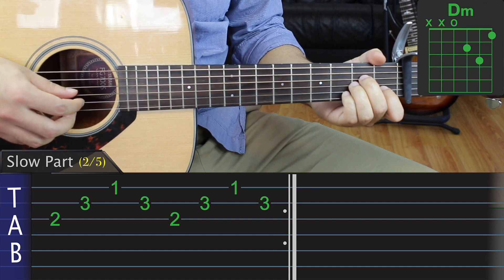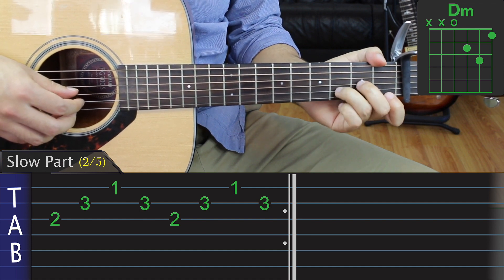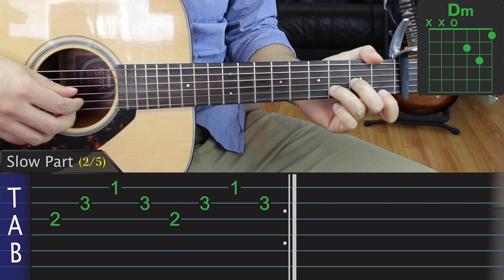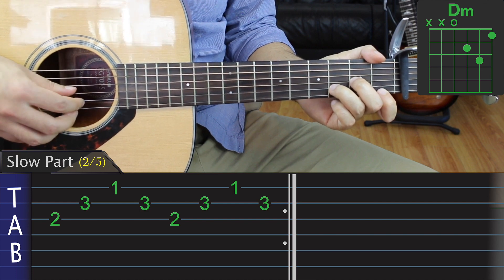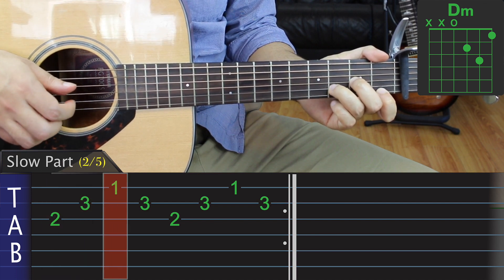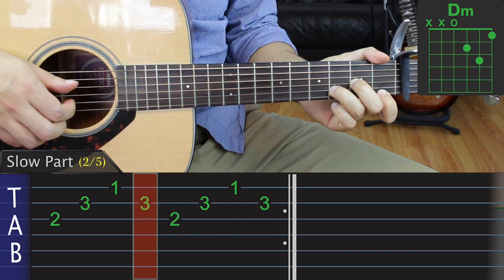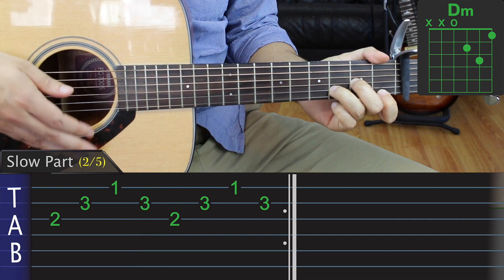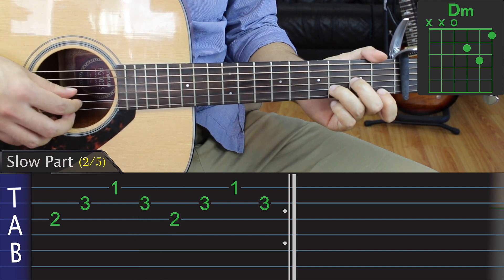After that, we'll use our left hand to form a D minor chord and apply the same right hand picking pattern. Thumb, index, middle, index. And just like in the last section, we repeat this pattern four times.